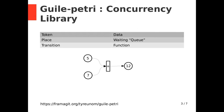Guile-Petri uses a Petri Net representation for concurrency. Instead of tokens, it has data that flows in the Petri Net. Instead of places, it has waiting queues where data is waiting to be processed. And instead of transitions, it has functions that process data.